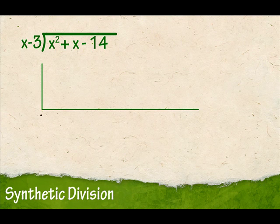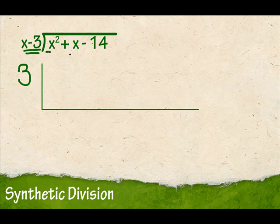The first thing I did was I made a half a box right here. Now I look here and I take the opposite of what I see. I see a negative 3, so the opposite of negative 3 is a positive 3. I write that number right here. Then I look at just the numbers, not the variables — just the numbers — and I write those in here.